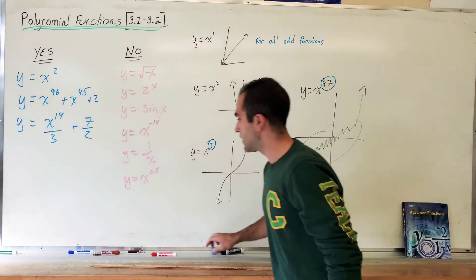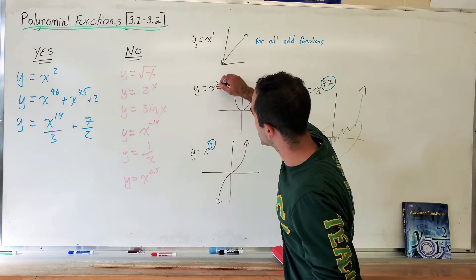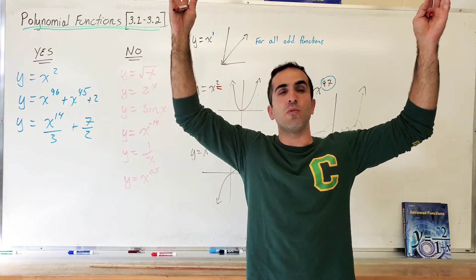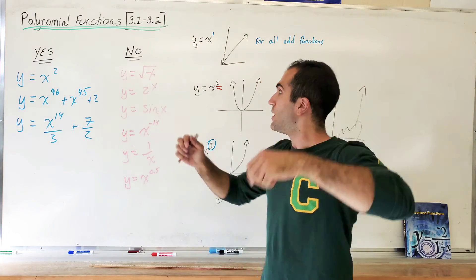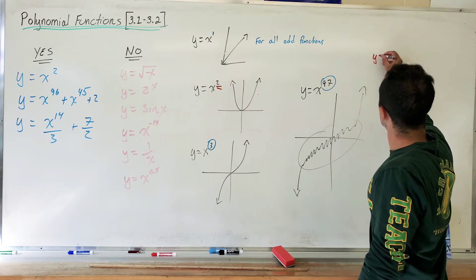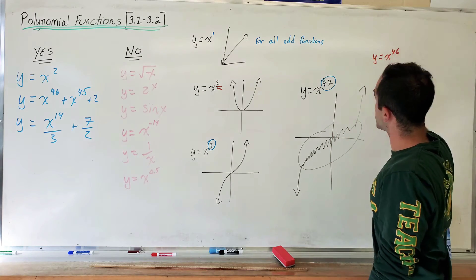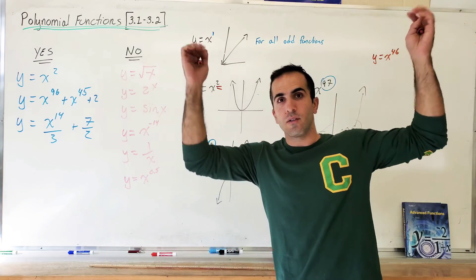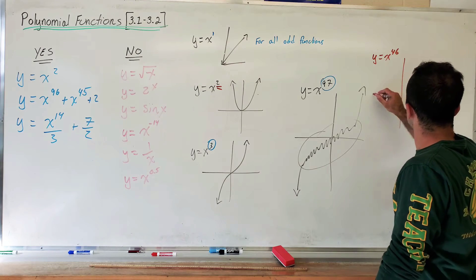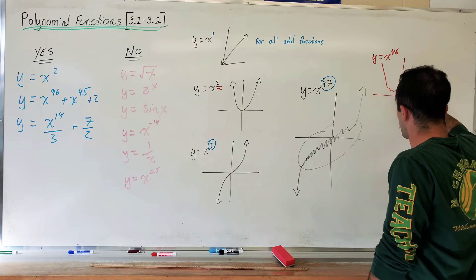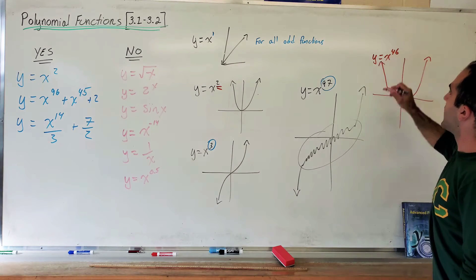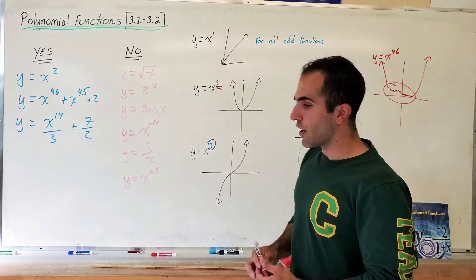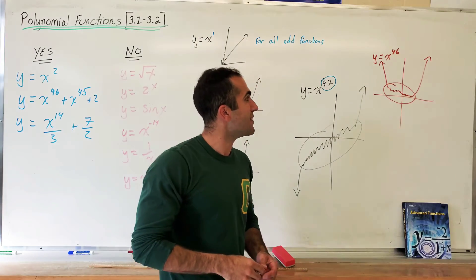Now, same thing with even exponents. When you have an even exponent, the end behaviors are the same. This goes up to infinity. This goes up to infinity. So if I have something like y equals x to the 46. What's x to the 46? Well, it's even. So it looks like this. Something that I don't care about and bam, back up. Okay? Again, we're not interested in this yet. We will at the end of the chapter. But for now, you need to focus on the end behaviors and the differences.